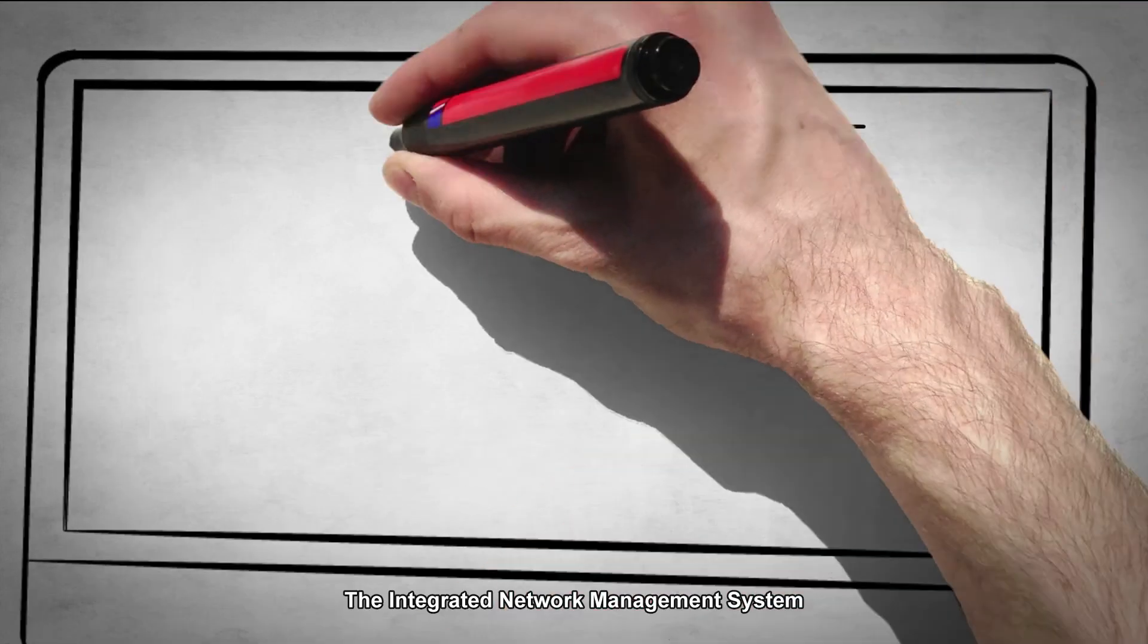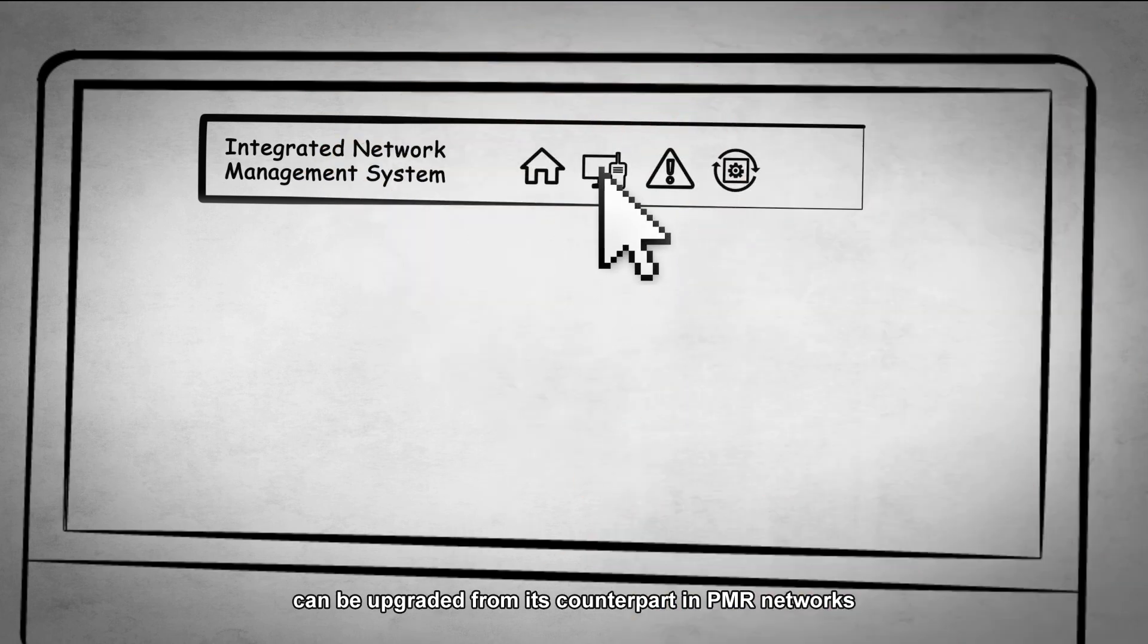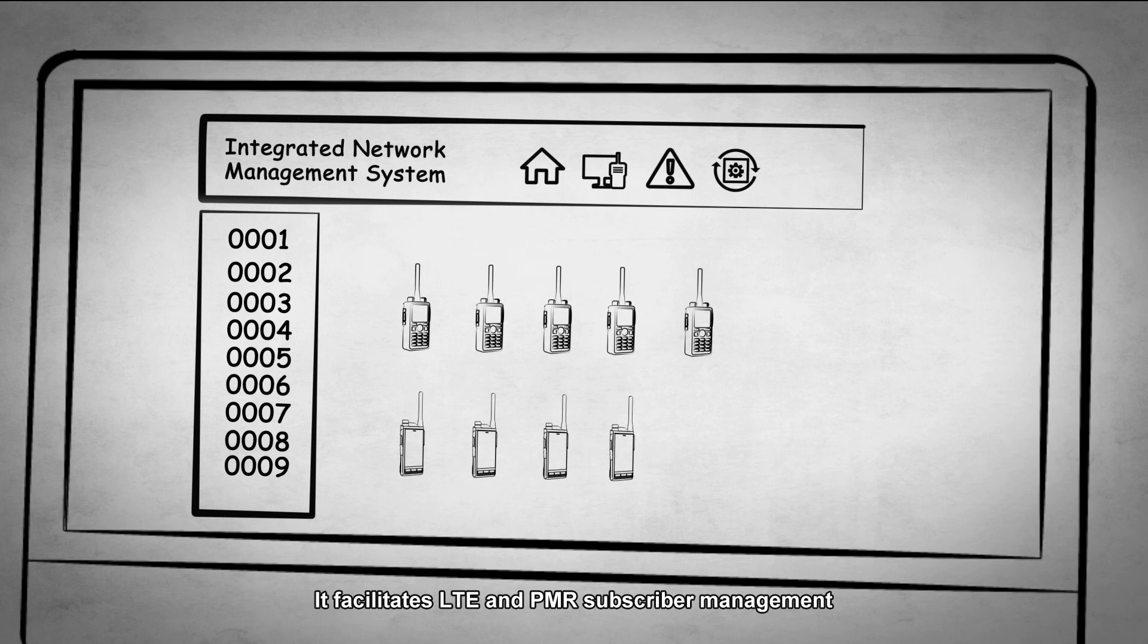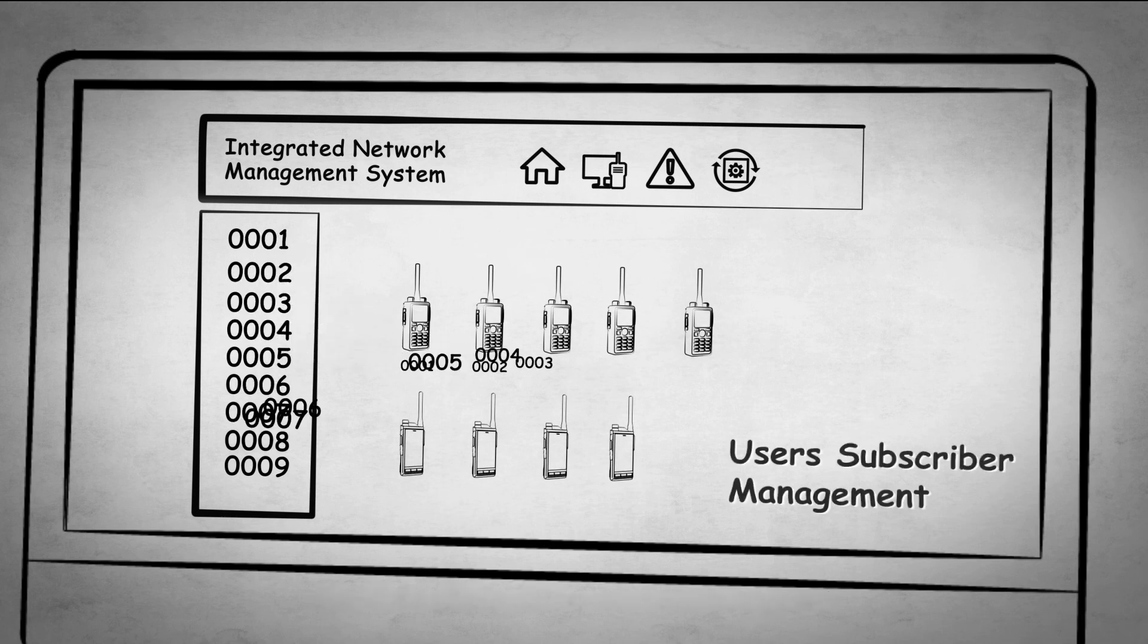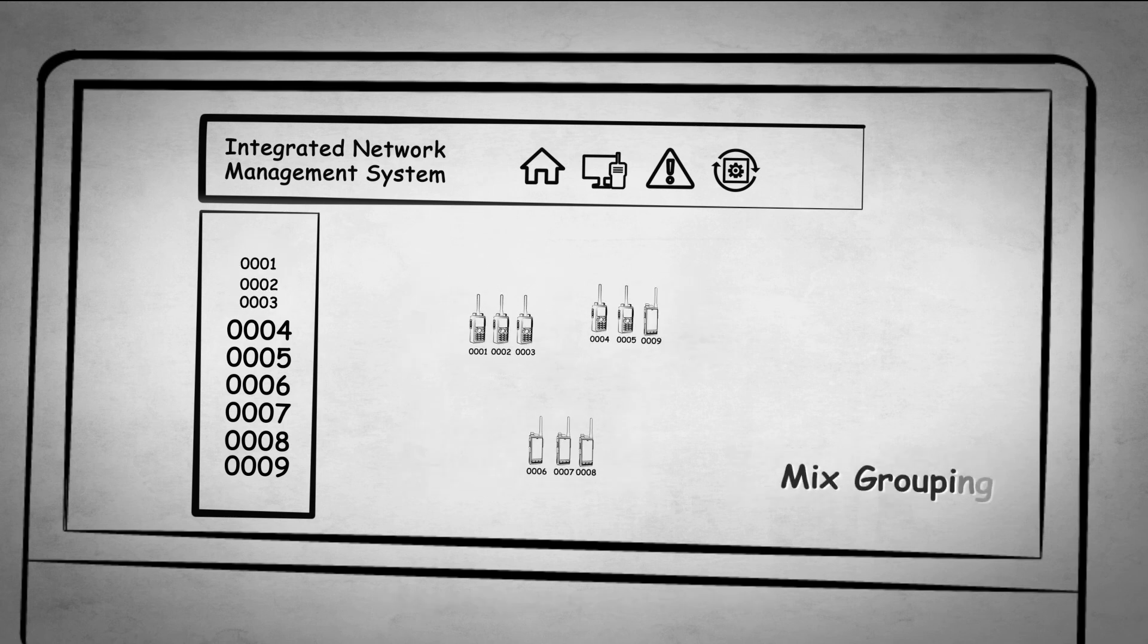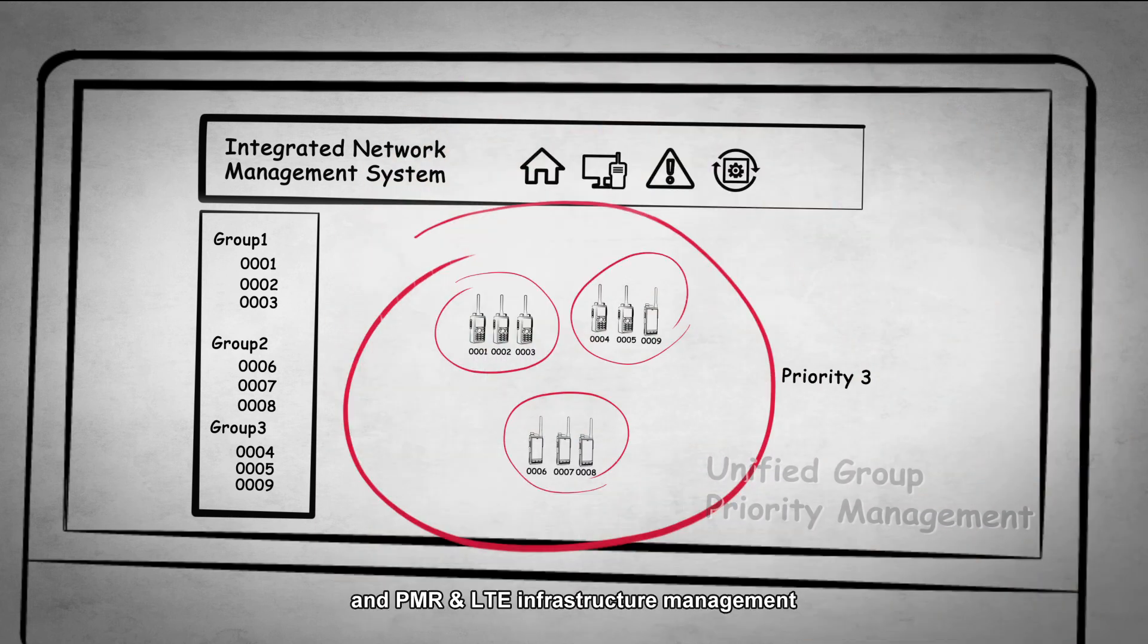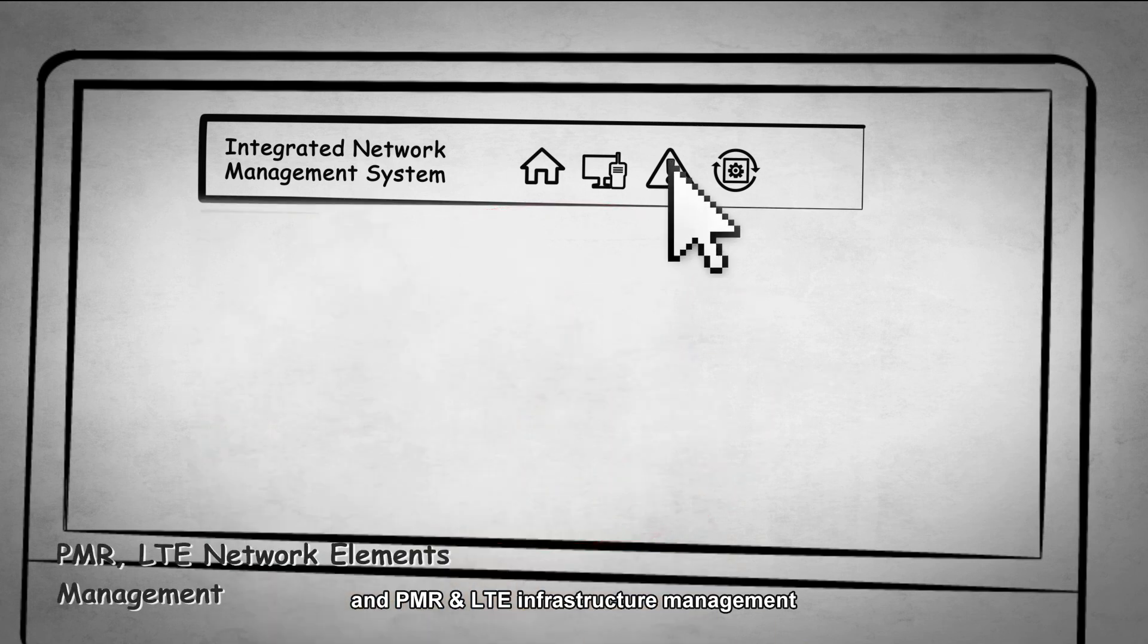The integrated network management system can be upgraded from its counterpart in PMR networks. It facilitates LTE and PMR subscriber management, mixed grouping of multi-mode terminals, unified group priority management, and PMR and LTE infrastructure management.